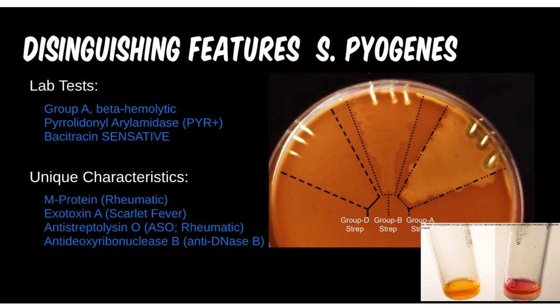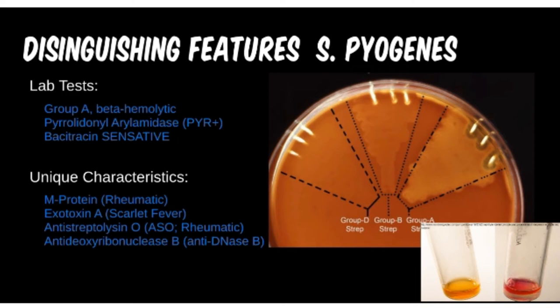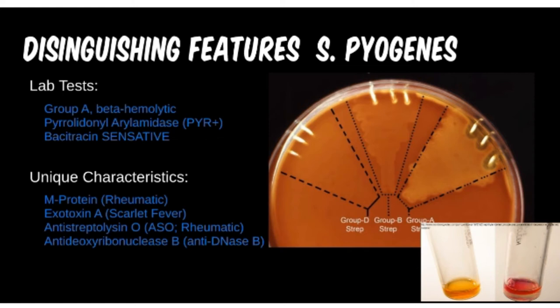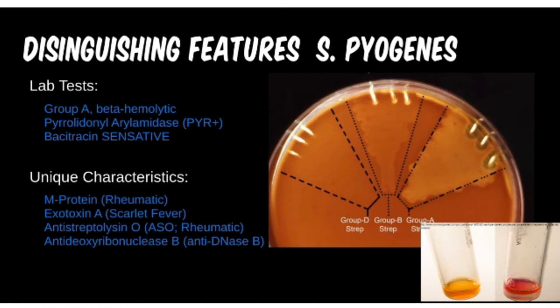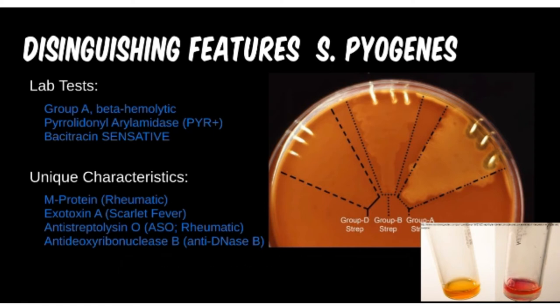For the unique characteristics of Group A beta-hemolytic streptococcus, these particular toxins are associated with different diseases and can help identify the cause of related symptoms. This is why not everyone with a strep or staph infection has the same reaction. M protein is an antiphagocytic virulence factor which prevents opsonization. Exotoxin A, seen in scarlet fever — also called toxic shock-like syndrome — activates immune pathways. ASO and anti-DNase antibodies are produced by your body when fighting off a strep infection, and high blood levels may detect a current infection.